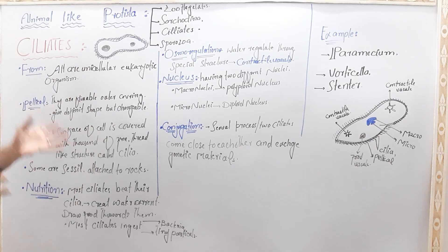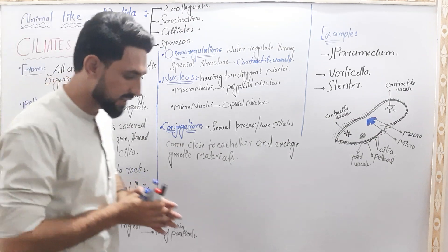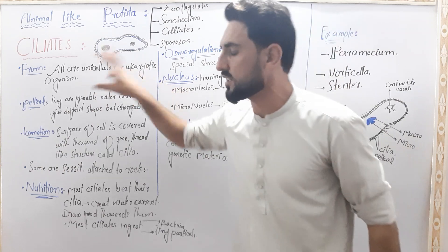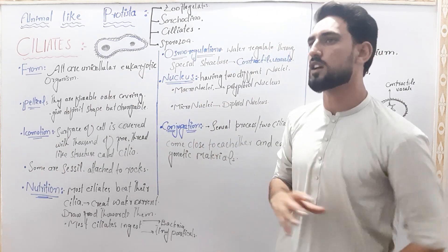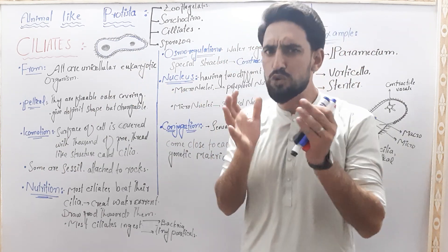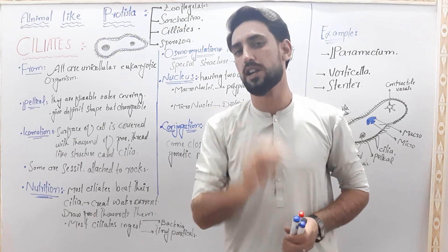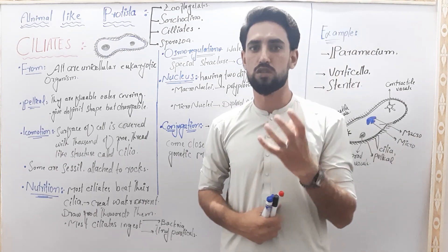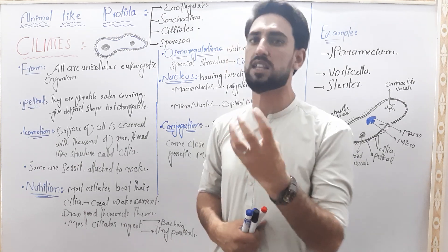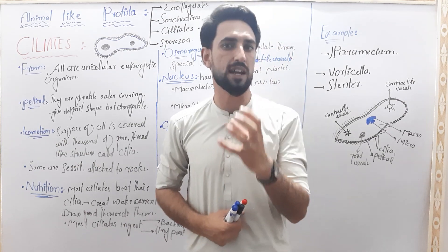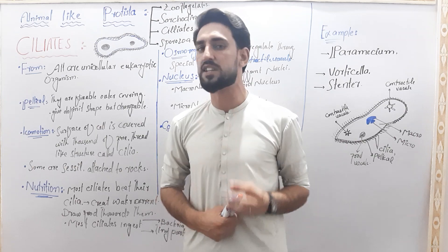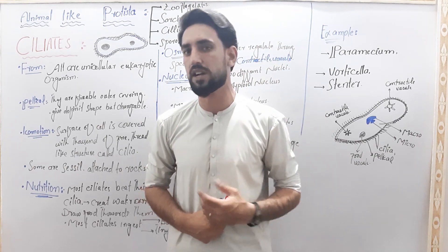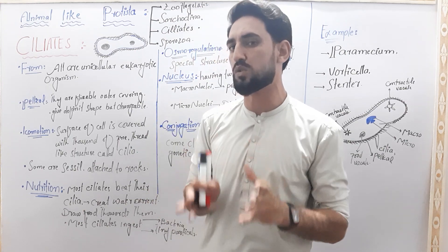The most specific thing about the animal-like protists is: what is a eukaryotic organism? The animal-like protists are unicellular, so they are eukaryotic organisms. The eukaryotic cells are those cells with membrane-bonded organelles such as mitochondria, chloroplast, endoplasmic reticulum, etc. This type of cell is known as a eukaryotic cell.